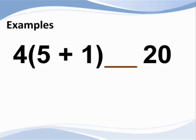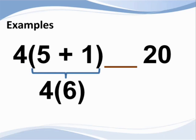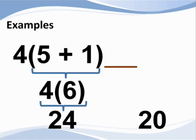First, we would simplify the contents of the parentheses, 5 plus 1, which is 6. Then we multiply 4 times 6 to get 24. The number on the right is smaller, so the symbol points to it.